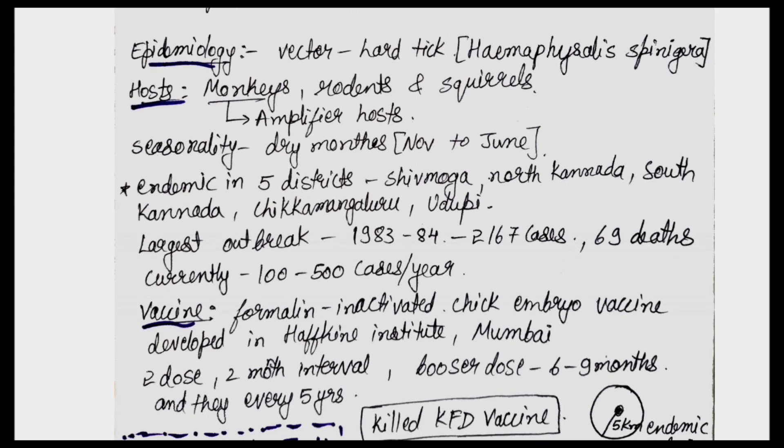Moving to epidemiology: the vector is the hard tick, specifically Haemaphysalis spinigera. The hosts are monkeys, rodents, and squirrels, but monkeys act as the amplifier host — meaning the virus multiplies rapidly in monkeys.